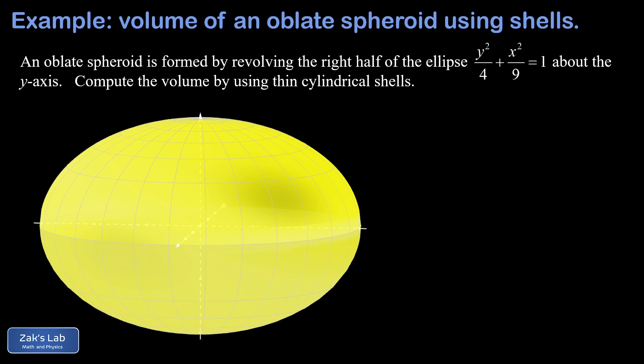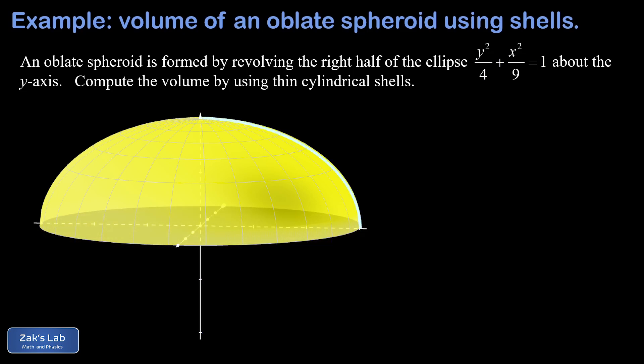We generated this by revolving the entire right half of our ellipse about the y-axis, but the calculation is going to be simpler if we revolve only the upper half of the ellipse and then double the result. So now we just revolve this section of the ellipse in the first quadrant, which has the equation y equals 2 square root of 1 minus x squared over 9, just solving the ellipse equation for y and taking the positive result.